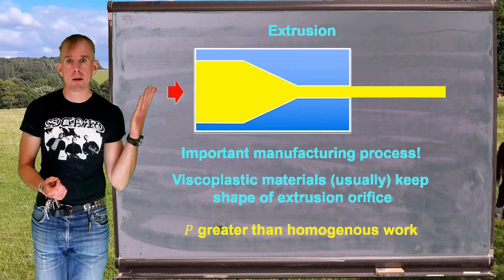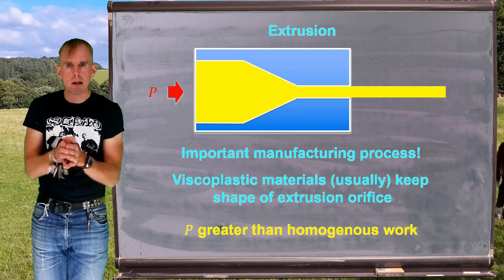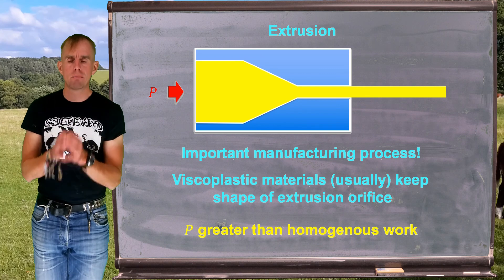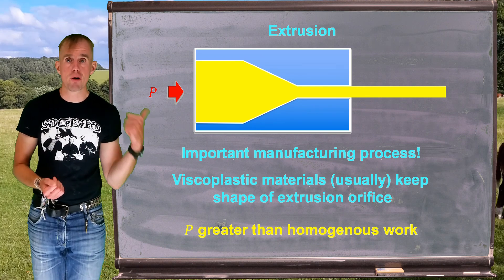Now, if we think about real extrusion processes, presumably the pressure we have to apply, that work per unit volume, is greater than the homogeneous work in order to get the extrudate to move.